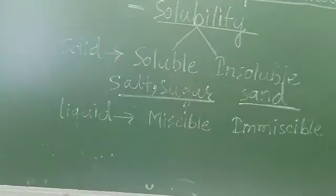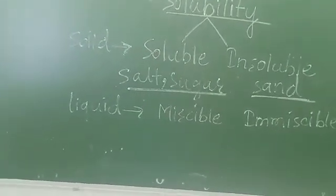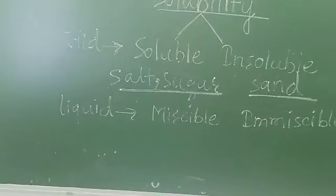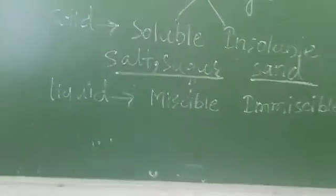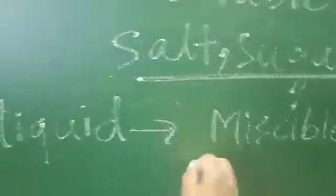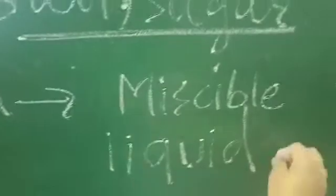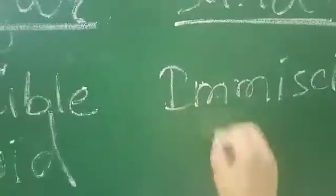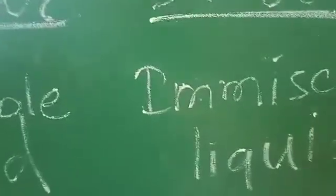Next, in the case of liquid: a liquid may be soluble in water. A liquid which dissolves in water is known as a miscible liquid, and a liquid which does not dissolve in water is known as an immiscible liquid.